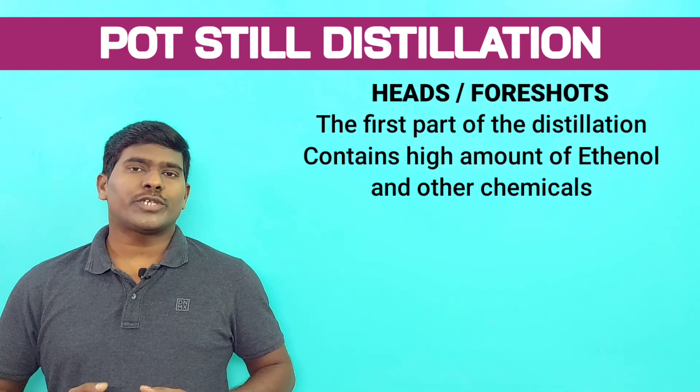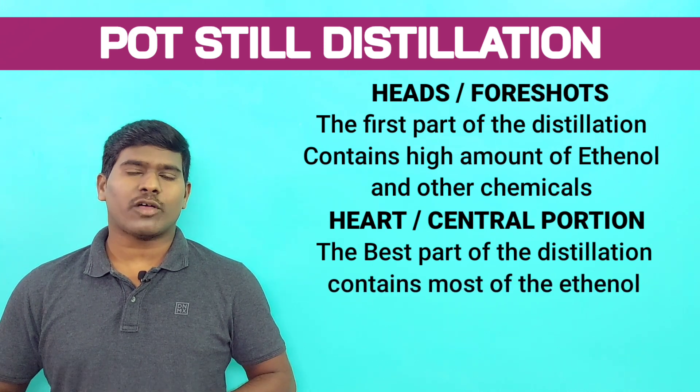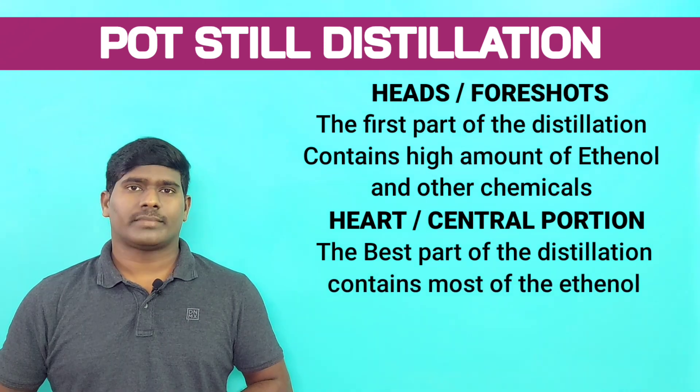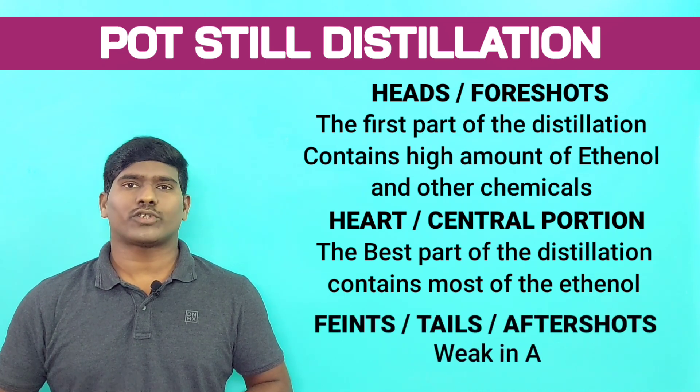The central portion or the heart of the distillation is the best part. It has an alcoholic strength of about 80%. The final part of the distillation is called faints, tails or aftershots.